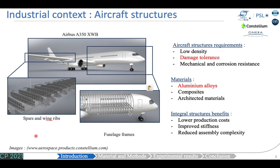I will start by presenting the industrial context. The application field of the study material is aircraft structures, mainly the fuselage and the wings. As you can see in these images, there is a rear spar, a front spar, and the wing ribs. Here we can see fuselage frames. Multifunctional materials are needed for aircraft structures, since these parts require low density, damage tolerance, and mechanical and corrosion resistance.